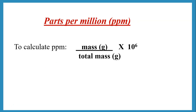To get parts per million, we calculate it by putting the mass of the substance over the total mass of the solution times 10 to the 6.